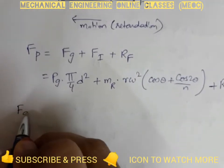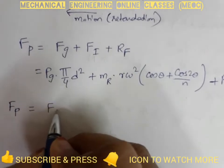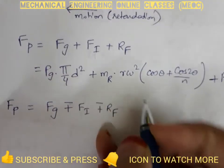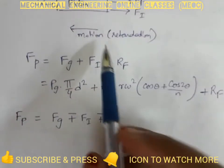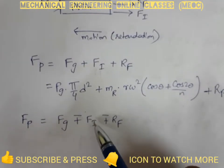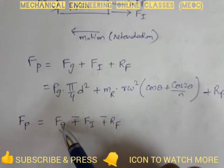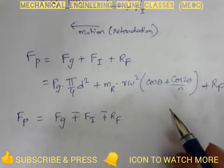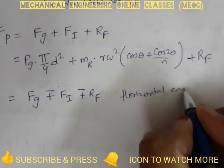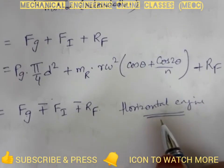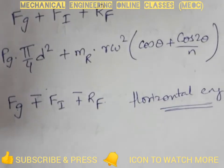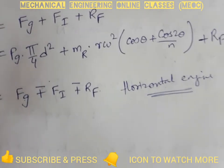In general, Fp can be written as Fg minus-or-plus FI minus-or-plus RF, combining both cases. When the piston is in acceleration: Fg minus FI minus RF; when in retardation: Fg plus FI plus RF. This equation applies to a horizontal engine, as shown in the figure. In the case of a vertical engine, the effect of the weight of the reciprocating part is also considered.